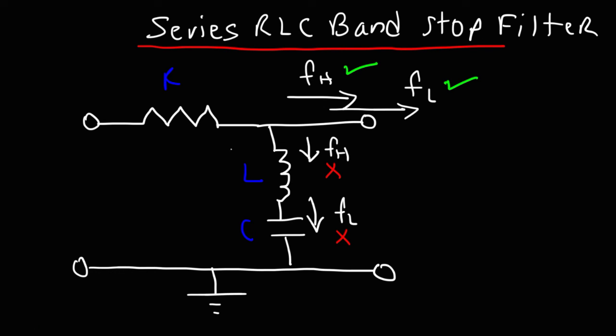The mid-level frequencies can flow through the LC part of the circuit. The ones that are close to or in resonance with the inductor and the capacitor won't be blocked by this portion of the circuit — they're going to flow right through. So if they flow to ground, they're not going to make it to the output. In this circuit, the mid-level frequencies are blocked — they're filtered out to ground. But the high-level and the low-level frequencies make it to the output. So this is another type of bandstop filter.